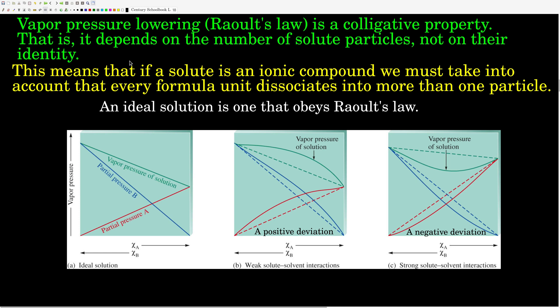This is what we call a colligative property. A colligative property is one whose value only depends on how many solute particles there are, not on what they are — not on their identity, just how many particles there are. What that means is if the solute can dissociate into more than one particle, like an ionic compound, we have to take that into account. For example, if we took one mole of sodium chloride and put it into water, we would expect to get two moles of particles: one mole of sodium ions plus one mole of chloride ions. We'll see that it's not quite that straightforward when we talk about the Van't Hoff factor.